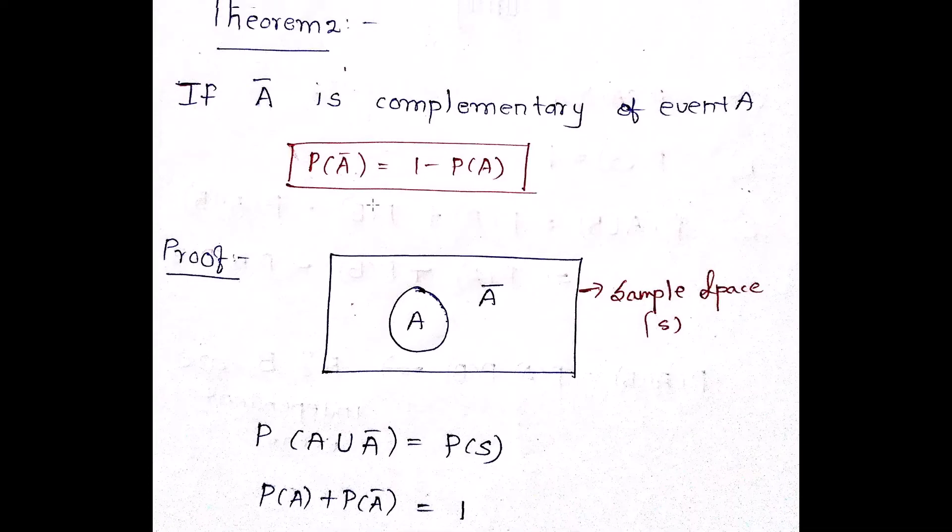Next, what is theorem 2? The theorem 2 is basically if A bar is the complementary of event A. What do I mean to say is that if I have an event A and A bar is the complementary of that, then in that case, probability of A bar is equal to 1 minus probability of A.